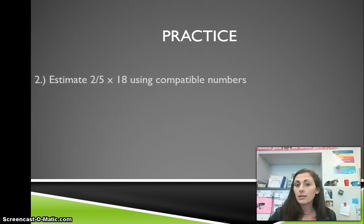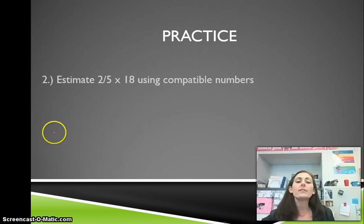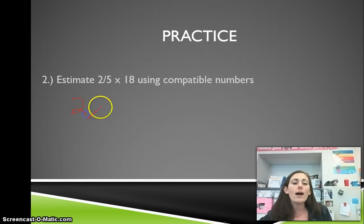Here's our second practice. Estimate two-fifths times 18 using compatible numbers. We have two-fifths times 18. We want to use compatible numbers. Here is our whole number. Our denominator is 5. So what is a compatible number that is close to 18?